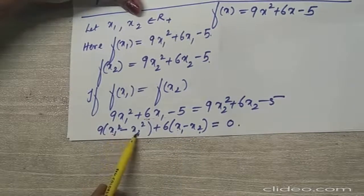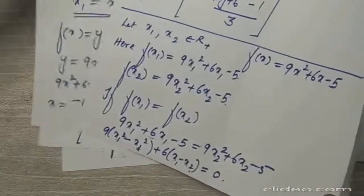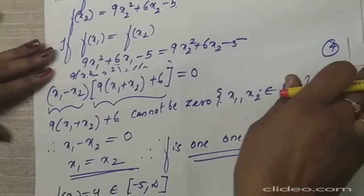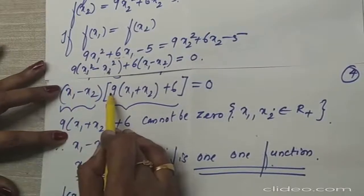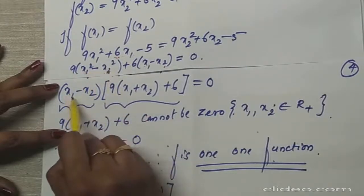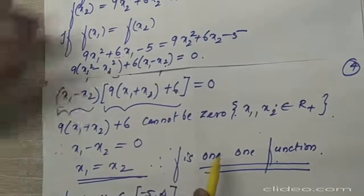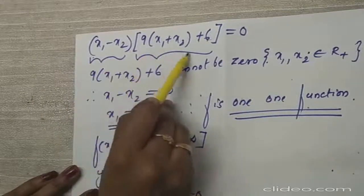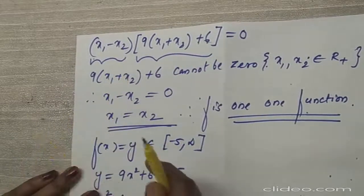Taking (x₁ - x₂) common from both terms — since x₁² - x₂² = (x₁ + x₂)(x₁ - x₂) — we get (x₁ - x₂)[9(x₁ + x₂) + 6] = 0. The product of these two terms equals zero, meaning either one or both terms are zero.